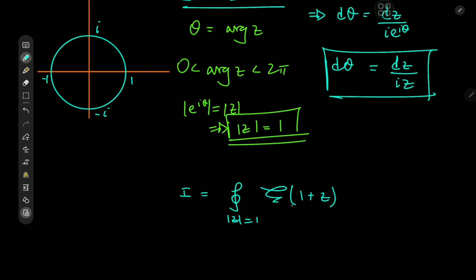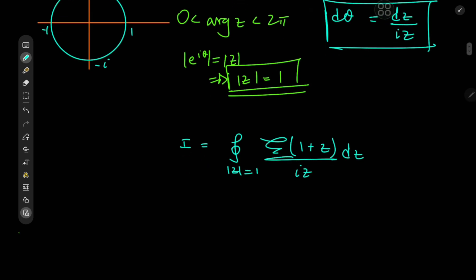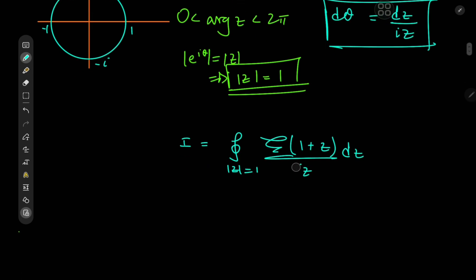1 plus e^(iθ), which is our z variable. And we have this factor of iz in the denominator because of the differential element. And this factor of 1/i is just a constant, so I'm pulling it outside the integration operator.